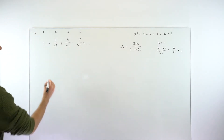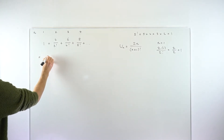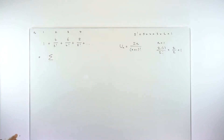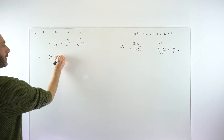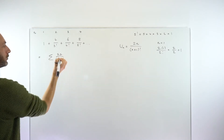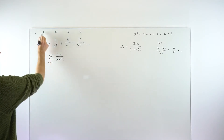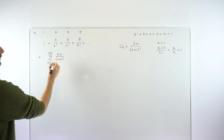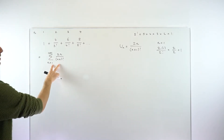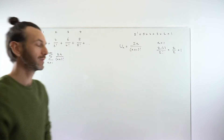Moving on, that allows us to write this series using sigma notation. Sigma just means add things up, so we're adding up all these 2n over (n+1)! terms. We're going to let the n values run from 1 — our first value — all the way to infinity, because remember, this carries on indefinitely. So that's a compact algebraic way to write the summation of this infinite series.